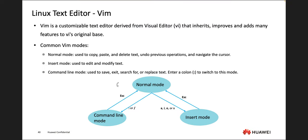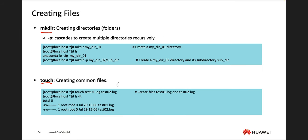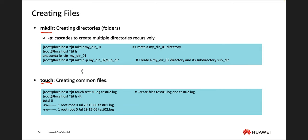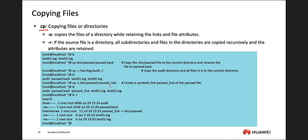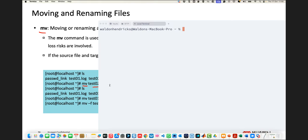Just to go back and recap these commands: the list command (ls) is for viewing a directory, cat is for viewing the contents of a file, mkdir makes a directory, touch creates a file, copy copies files, and move (mv) renames or moves files.